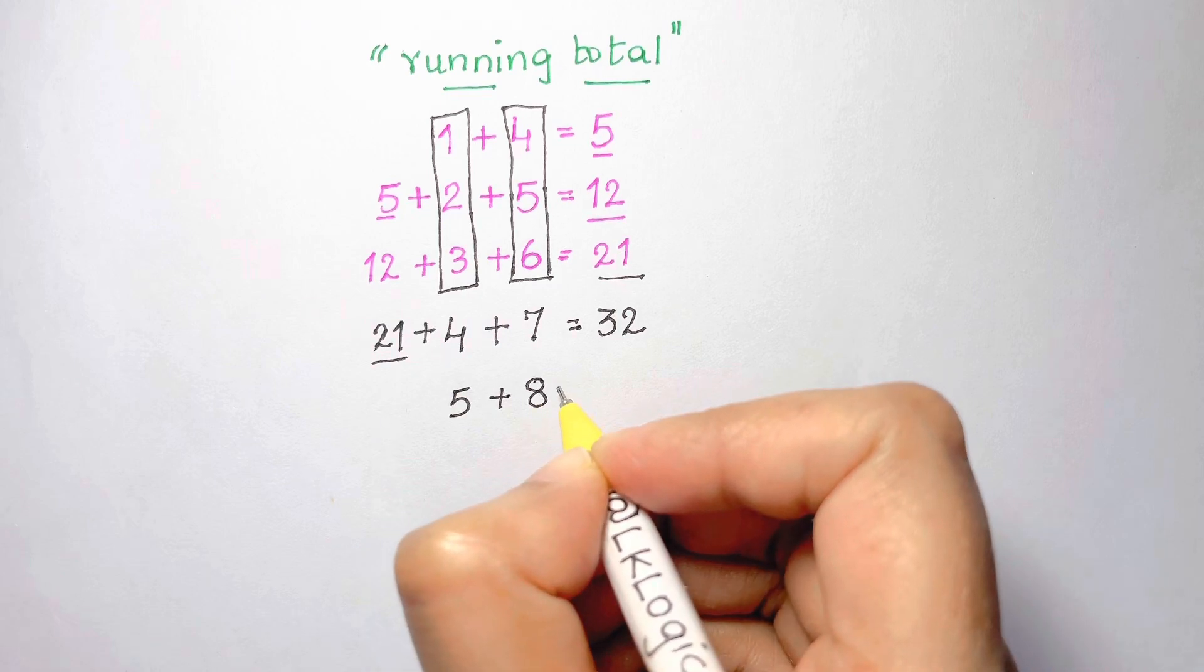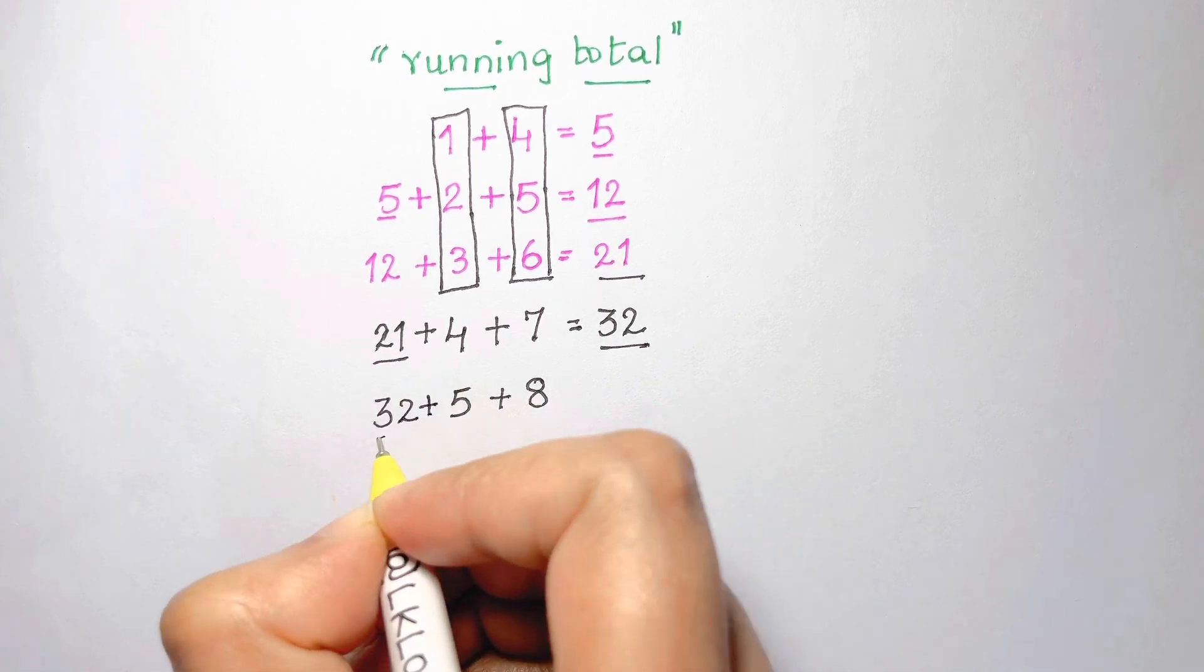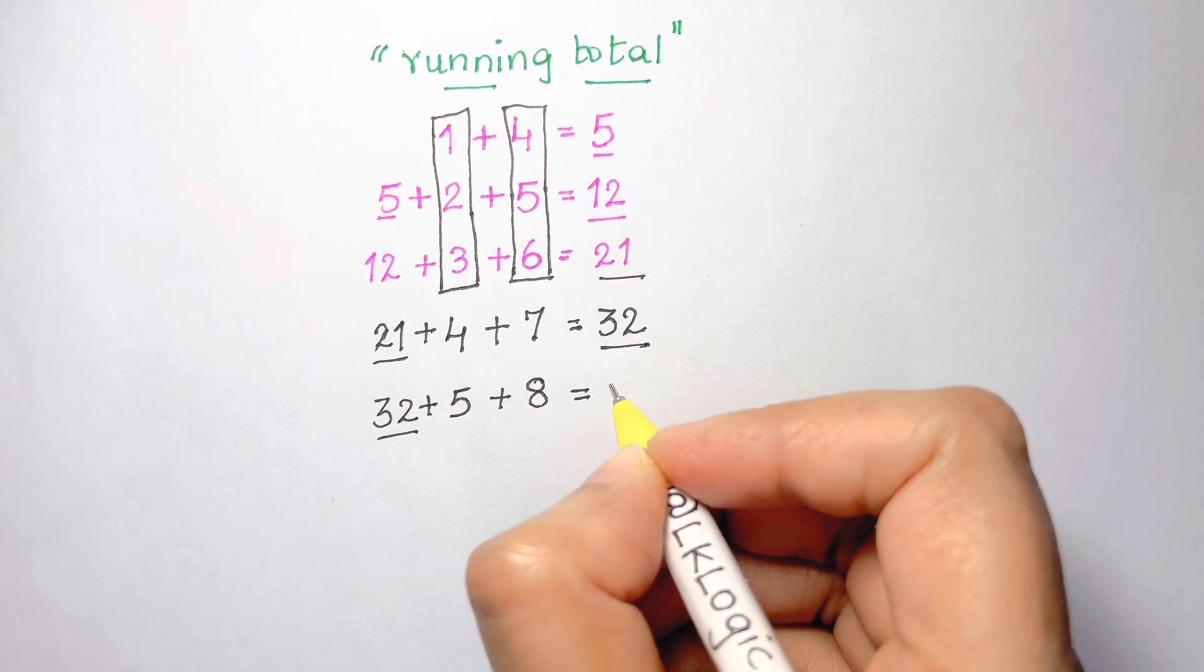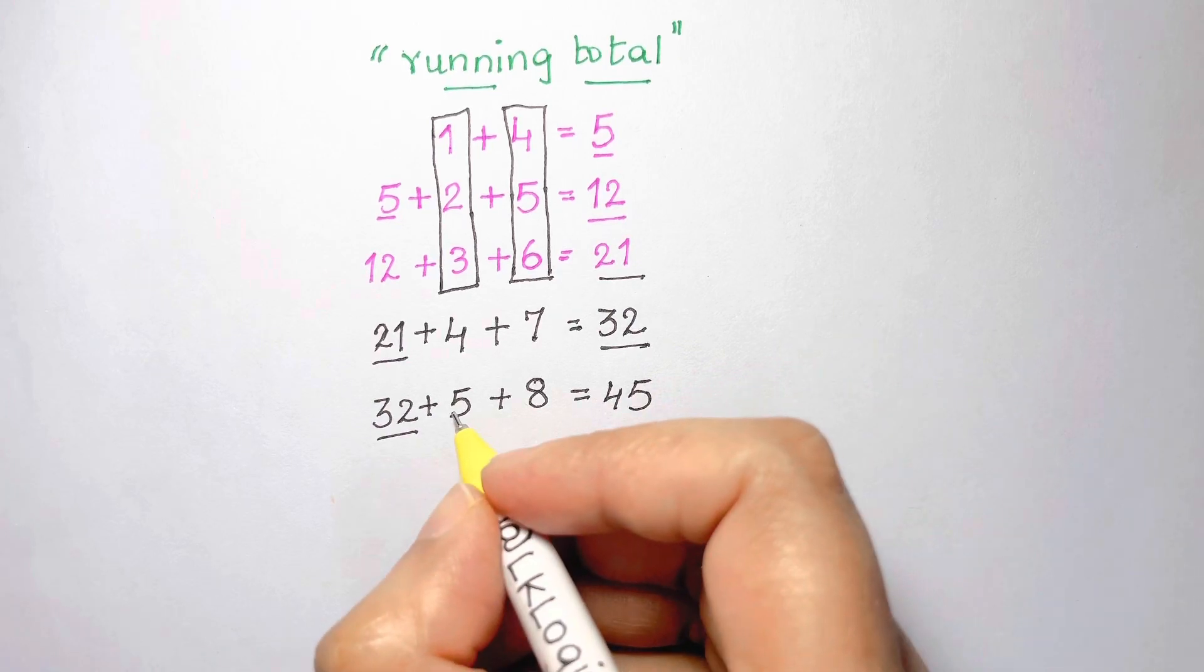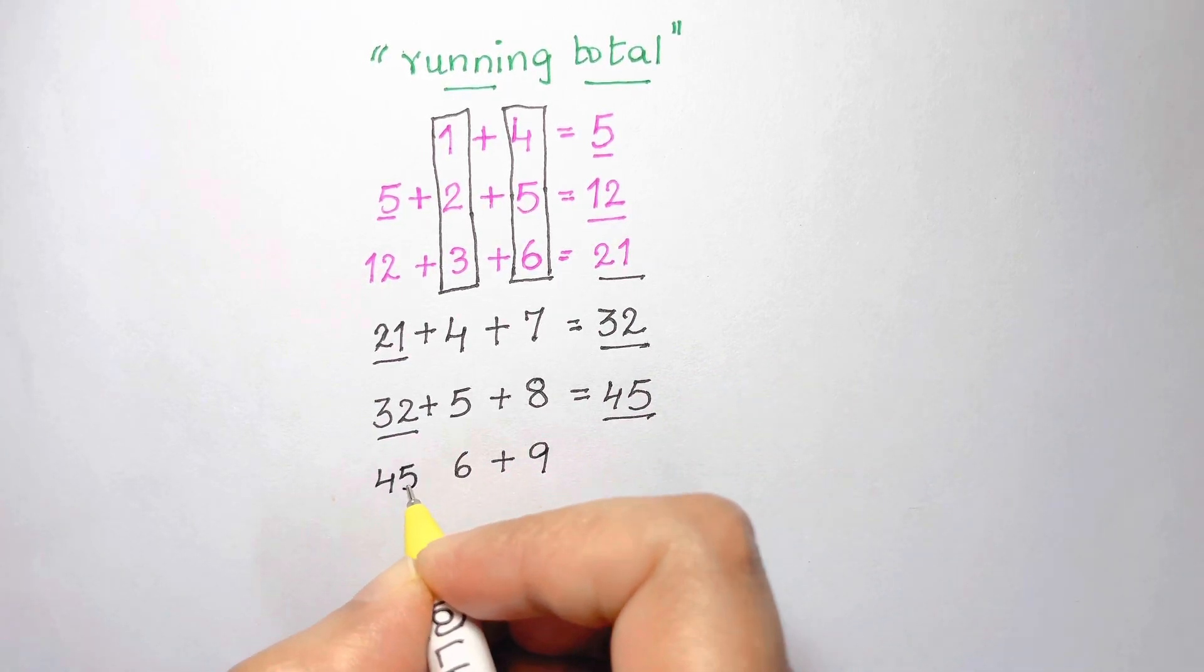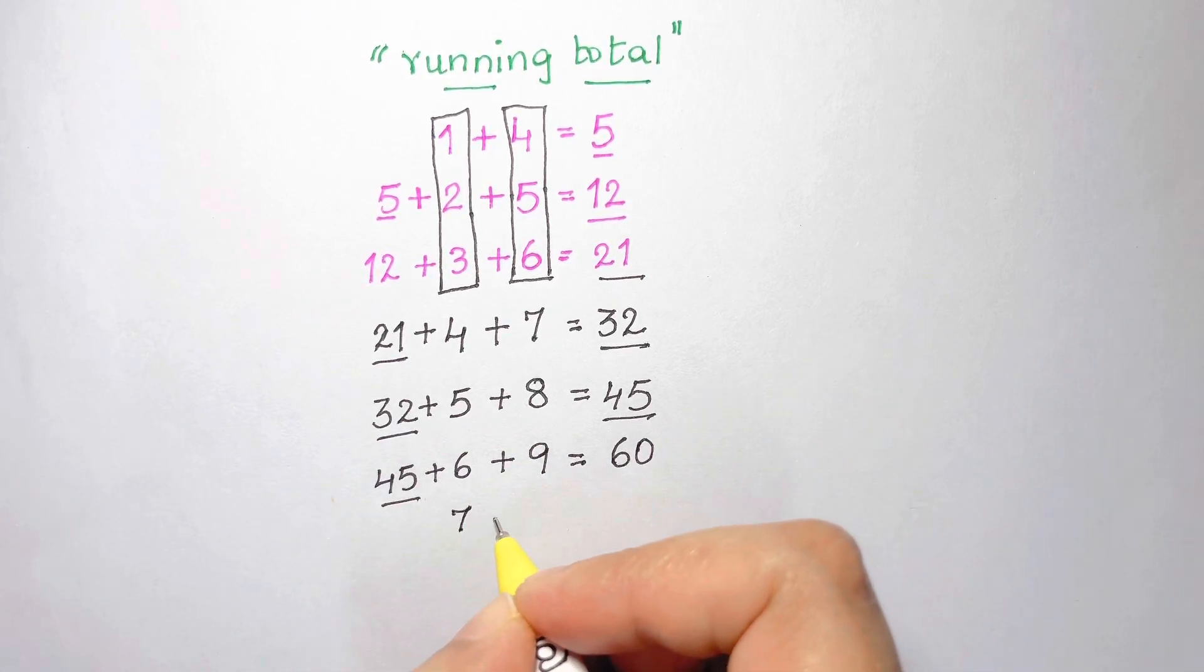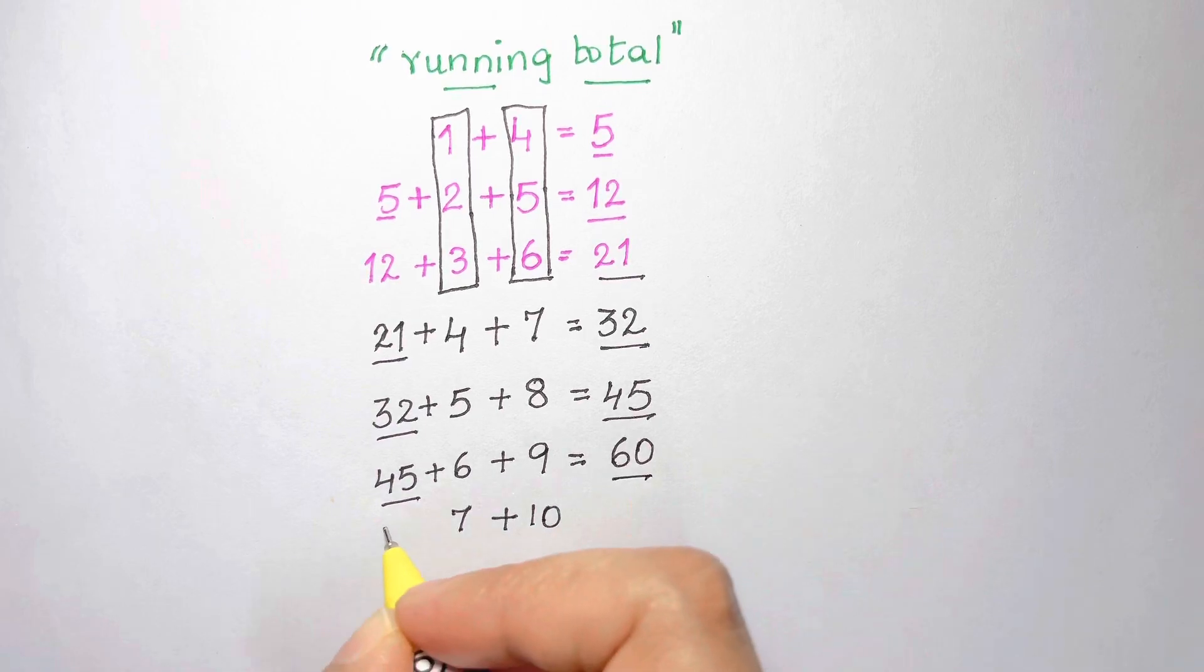What would be the next line? Well we would want to increase 4 by 1 to get 5, and we would want to increase 7 by 1 to get 8. So the next line would be 5 plus 8. We therefore take 32 plus 5 plus 8, and that gets us to 45. We continue the pattern, the next line should be 6 plus 9. We add that to our previous result of 45, we get 60.